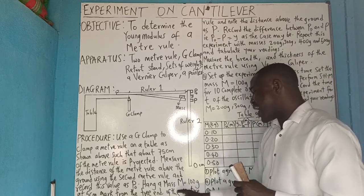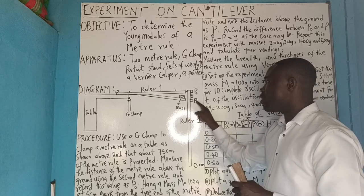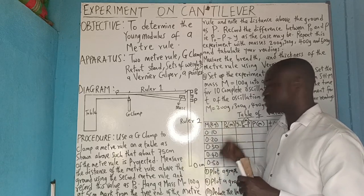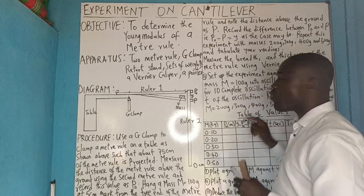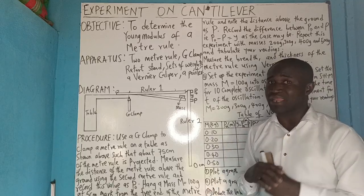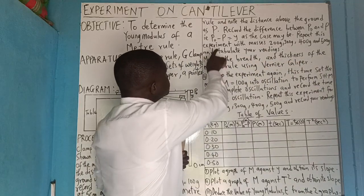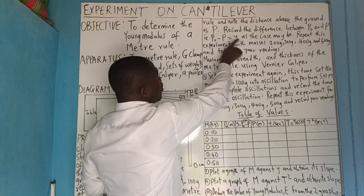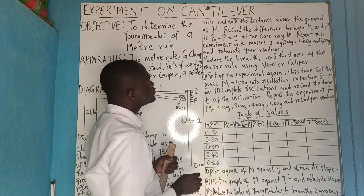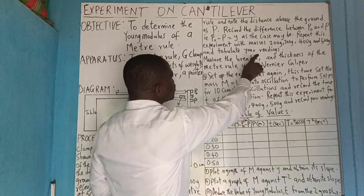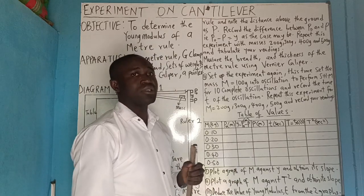When M equals 100 grams is hung, the meter rule depresses. Take the new distance from the ground and call it P. Subtract P₀ and P to get Y — the depression. Repeat this experiment with masses of 200 g, 300 g, 400 g, and 500 g, and tabulate your readings.